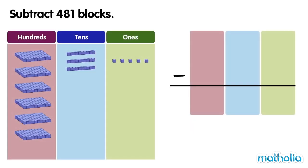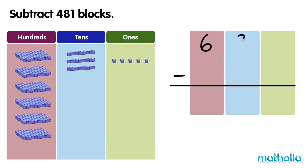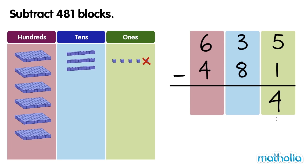We subtract 481 blocks. There are 635 blocks. We subtract 481 blocks. Let's start by subtracting the ones: 5 ones minus 1 one equals 4 ones.